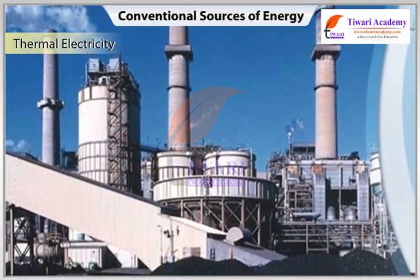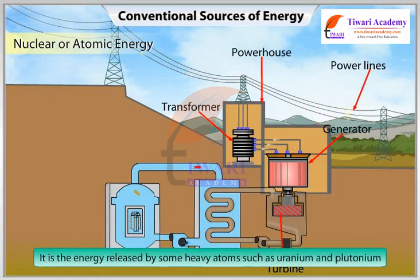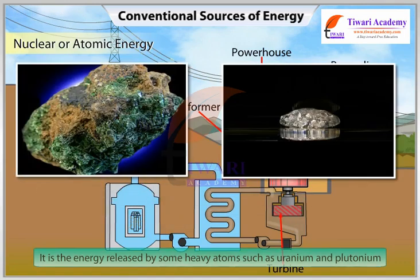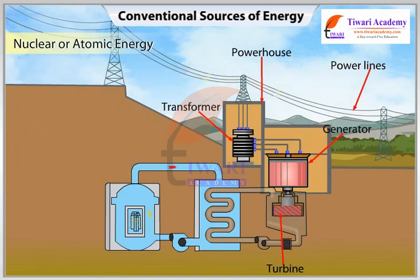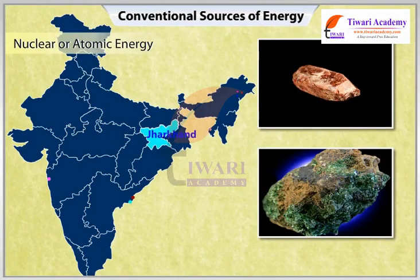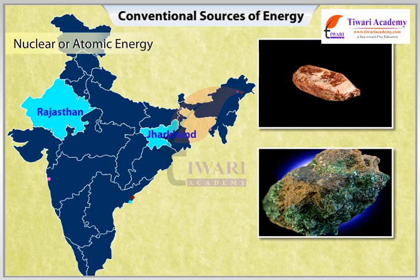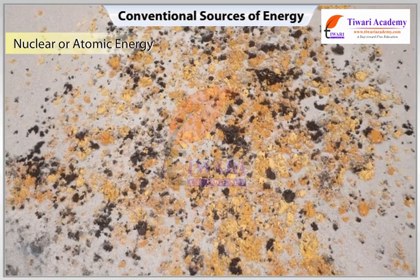Nuclear or atomic energy is the energy released by heavy atoms such as uranium and plutonium when they undergo disintegration. The energy released as heat is used to produce steam, which moves the turbine of electric power generators. Uranium and thorium found in Jharkhand and the Aravalli ranges of Rajasthan are used for generating atomic power. The monazite sands of Kerala are also rich in thorium.